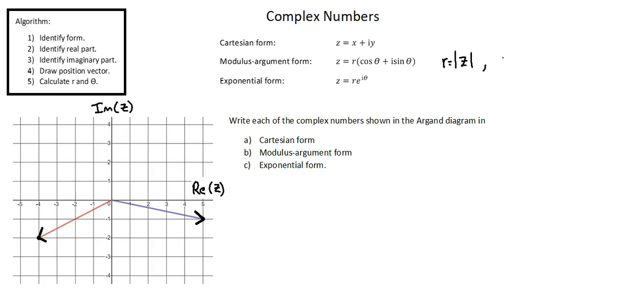And theta is an angle between negative pi and pi, inclusive of pi. This angle is referred to as the principal argument of a complex number, and is measured from the positive real axis, counterclockwise direction represented by positive angle value, and clockwise direction represented by negative angle value.